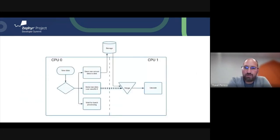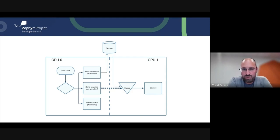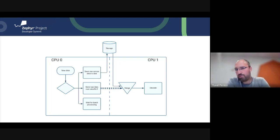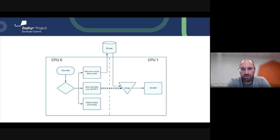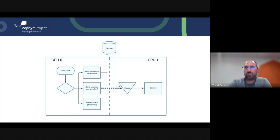Processing doesn't even need to happen on the same core. Here's a simplified view: when new data arrives, we have three options — save it to persistent storage as a raw buffer, send the raw data over wire, or process it in a separate thread on the same or a different core. In the first two options, when the other end — maybe a different core or different board — is ready to process, it reads the data and gets an instance of the same decoder.